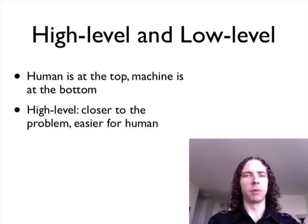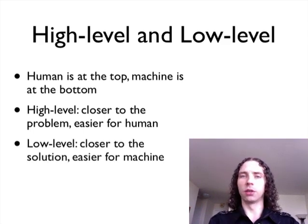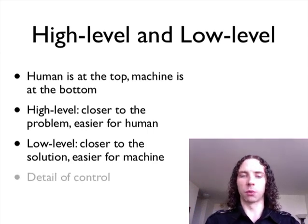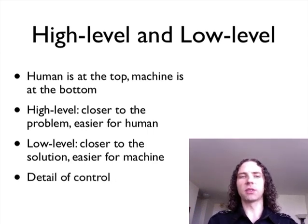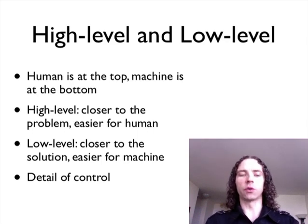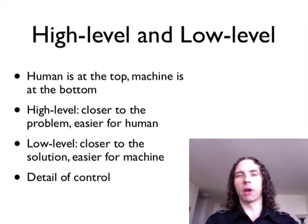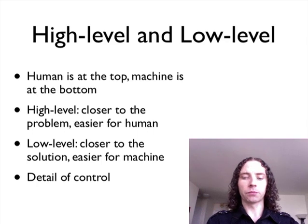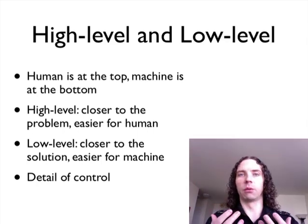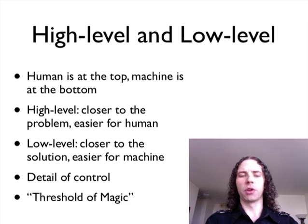It's the high-level closer to the problem, easier for a human. And the low-level ones are closer to the solution because they're how you actually implement the solution to the problem. And it's actually what the machine uses or it's closer to what the machine uses. And really it's just an issue of detail of control. How much control do you want over what you're doing? If you're using a very high-level language, it'll do a lot for you, but you lose a certain amount of control. Normally this is a good thing because you didn't need to do that yourself. But sometimes you have to dig down a little more in certain environments.